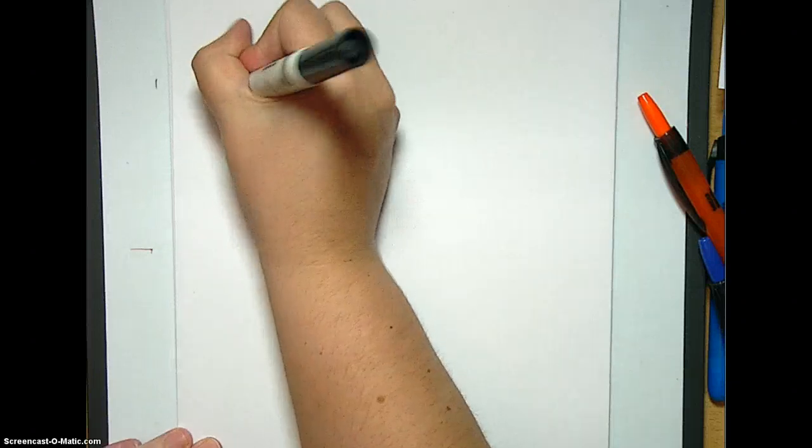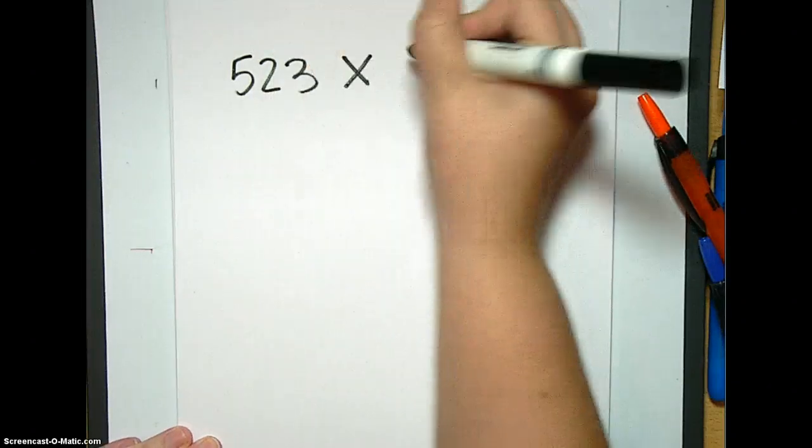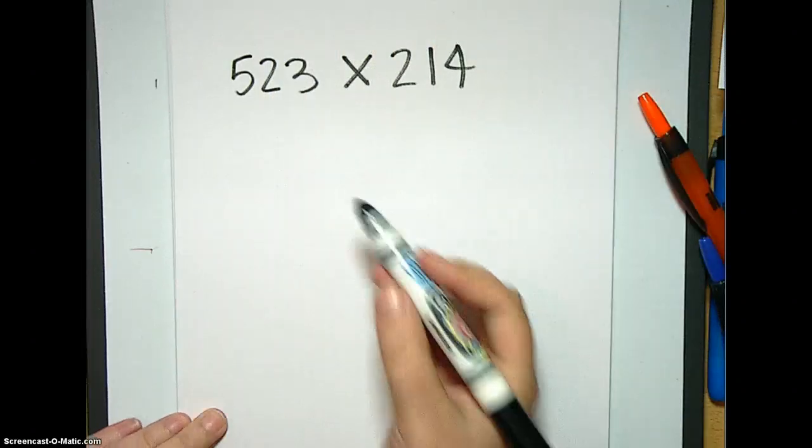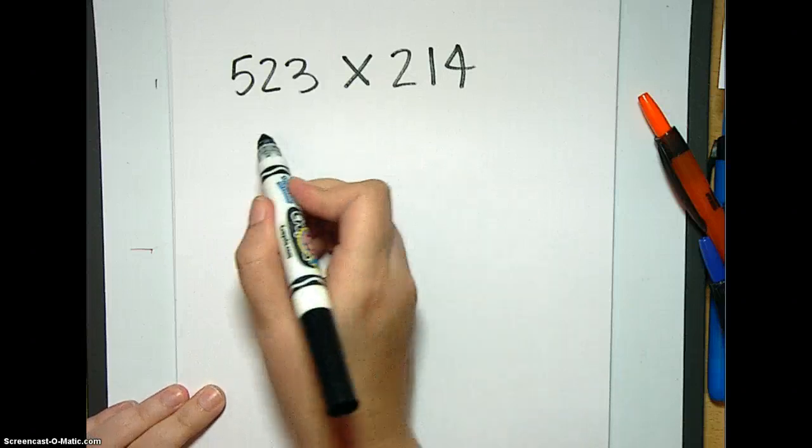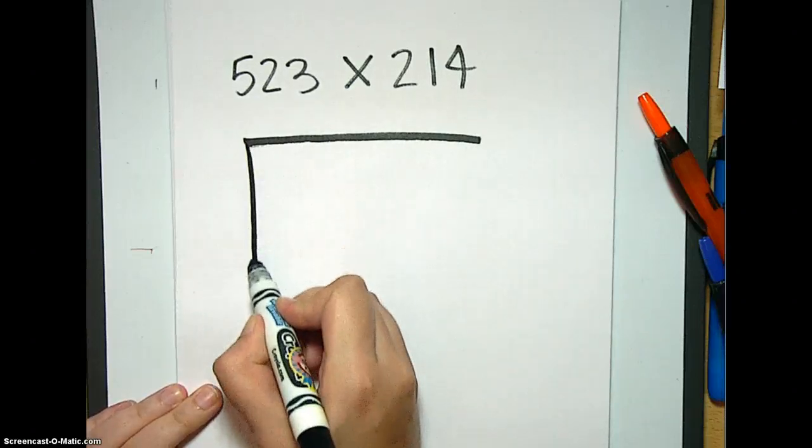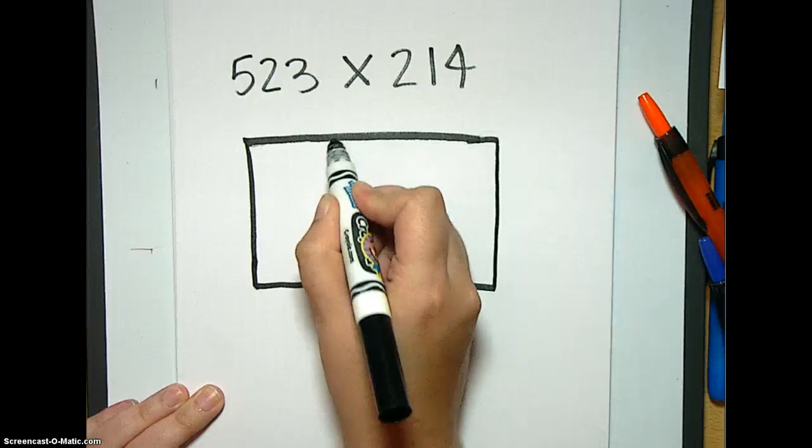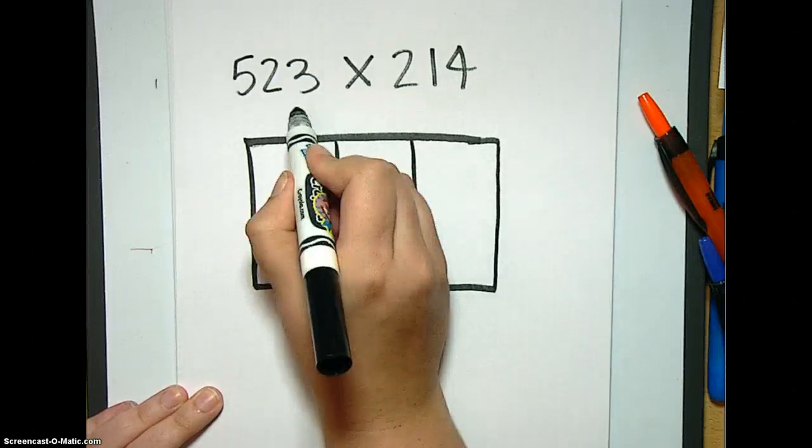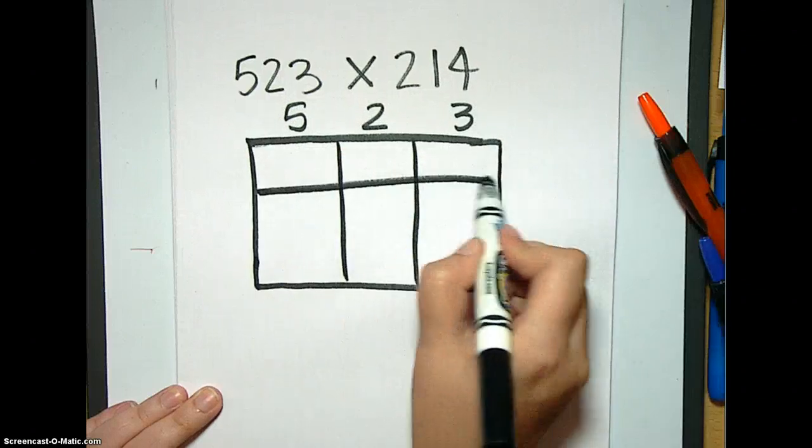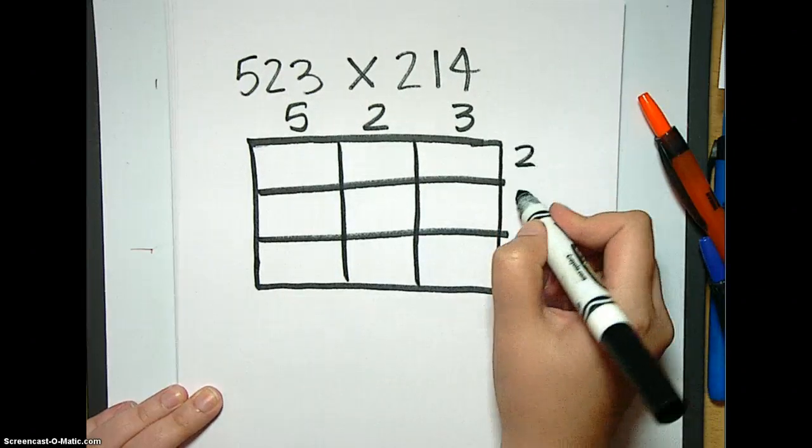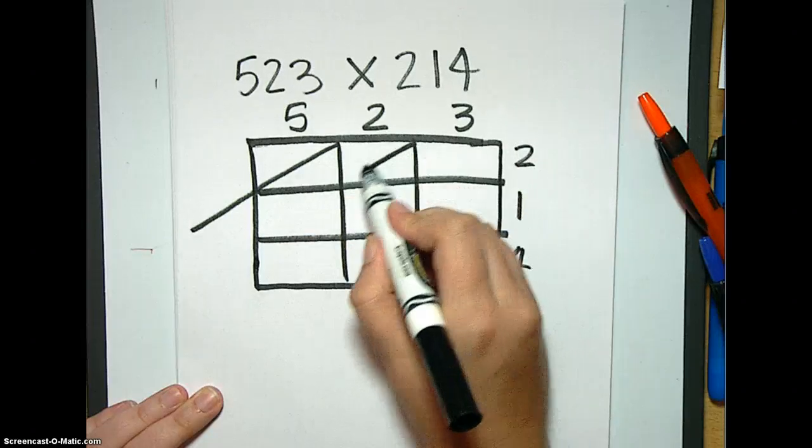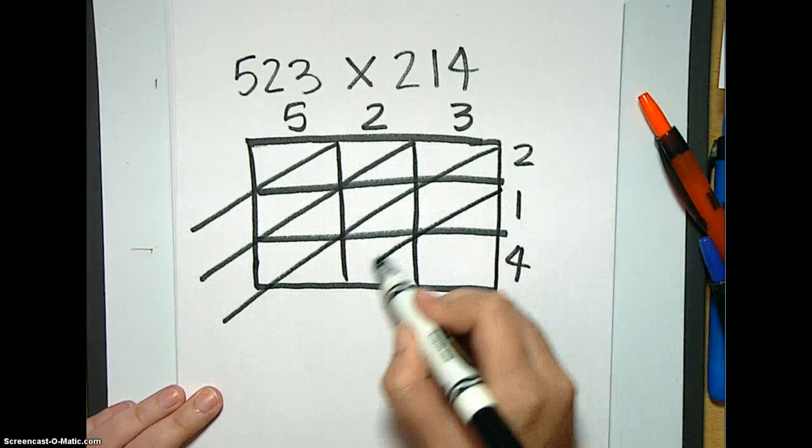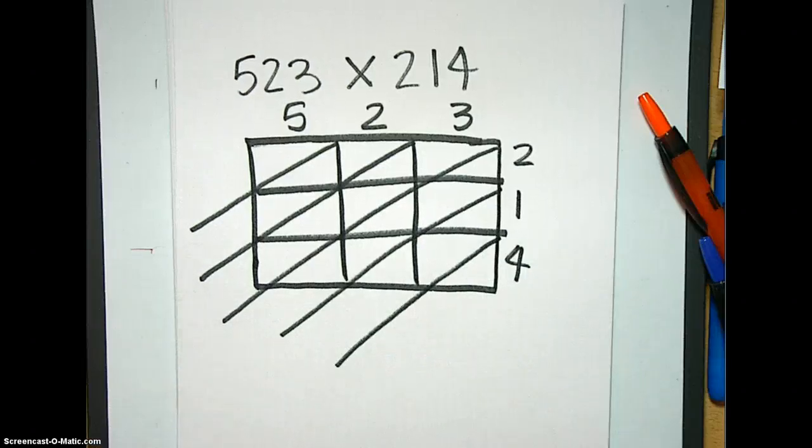Okay, so the next one that we are going to do is 523 times 214. We're going to make our lattice much bigger this time because we're going to have three rows and three columns. So big this way and big this way. So we can split it like this. This is going to be our 523, and this is going to be our 214. Make my diagonals. So I know that you're looking at this and going, that's huge, there's no way that that's even doable. There is. It's awesome. I love lattice because for this reason, your multiplication is just so little.